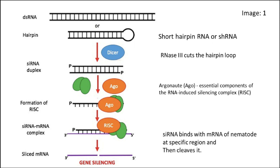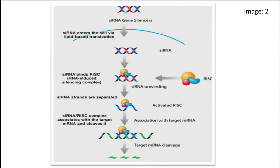This double-stranded RNA, or double-stranded short hairpin RNA, is converted into double-stranded siRNA. The nematodes ingest these siRNAs through their stylet, and they enter the cells. Inside the cells, the siRNAs are processed by the RISC system of the nematodes' RNAi pathway. A key component here is AGO, or Argonaute, which is the essential component of the RNA-induced silencing complex, RISC. The RISC then unzips the double-stranded siRNA into single-stranded RNA, which targets and cleaves the complementary sequences in the nematode's mRNA.